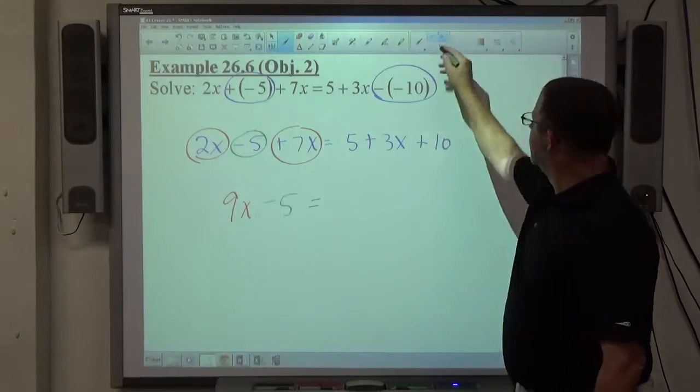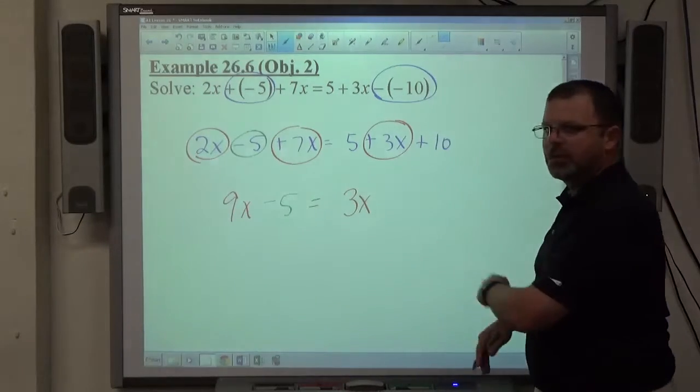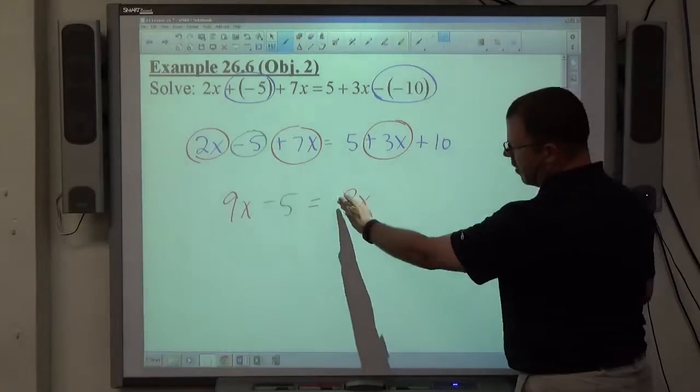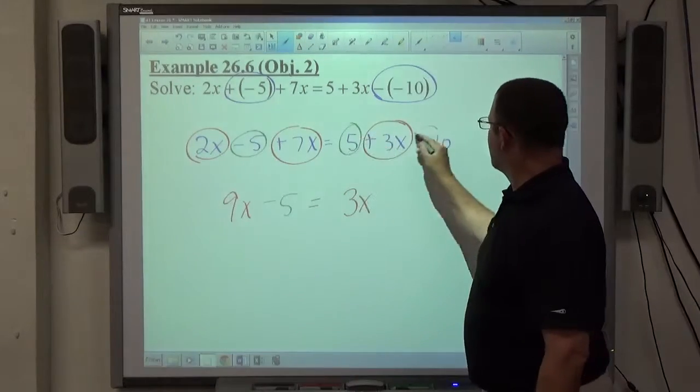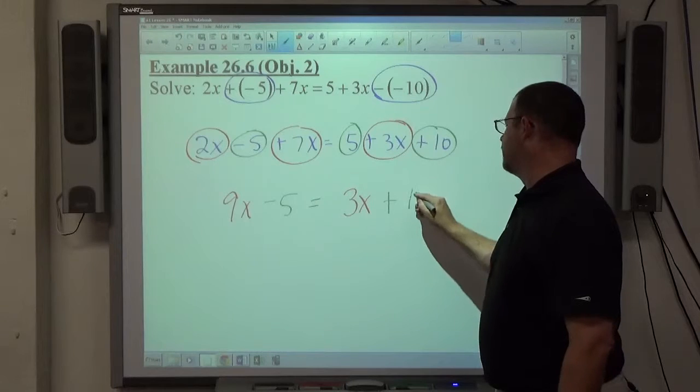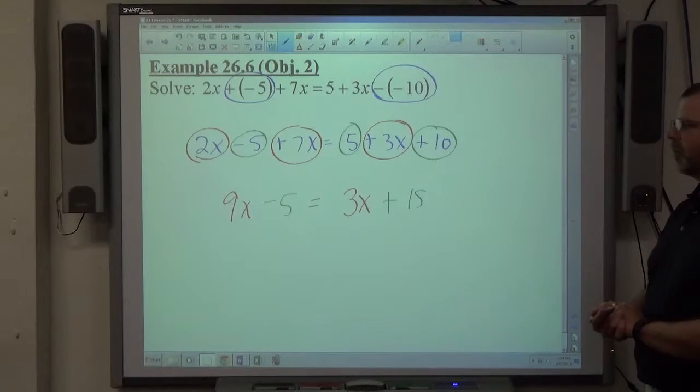On the right-hand side, we have 3x. It has no like terms, but it stays positive 3x being the first term in the expression on the right-hand side. I'm going to leave it just as positive without a sign on it. And then 5 plus 10 being the same sign I add. 10 is bigger, so it's positive. So 9x minus 5 equals 3x plus 15.